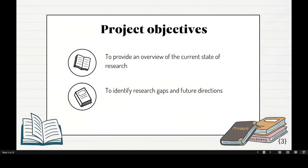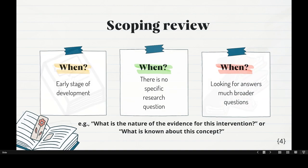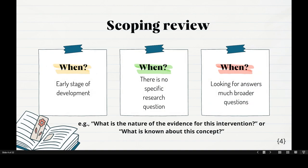The project objectives: to provide an overview of the current state of research because Gen.AI is still very new — we don't know what we don't know. That's why I wanted to conduct this study, to identify the research gap and future directions. For scoping review, we do it because we don't even know the research gap. We use scoping review at the early stage of development of some technology, or when there is no specific research questions.